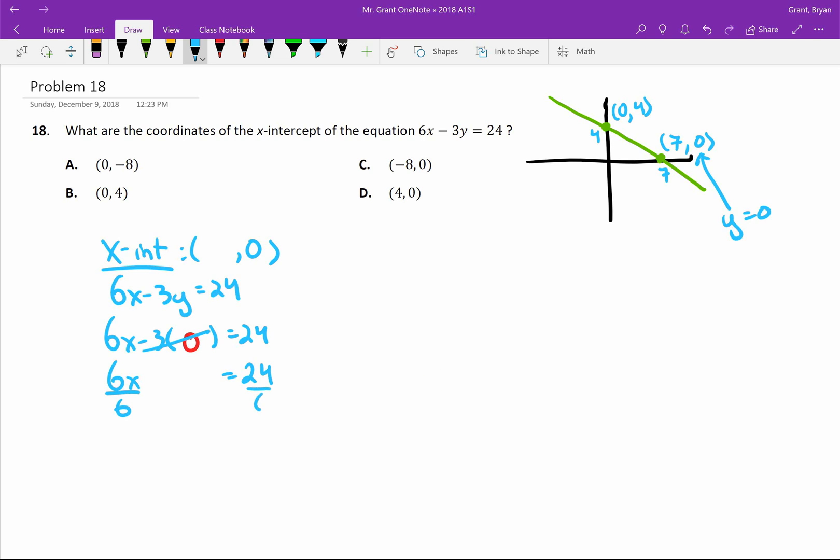Divide by 6, and we end up with x equal to positive 4. So we find a final answer of (4, 0), and we're done.